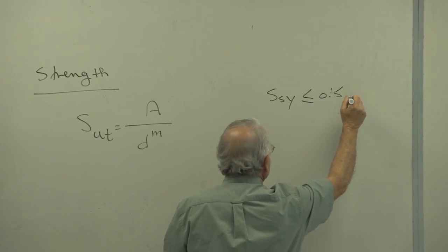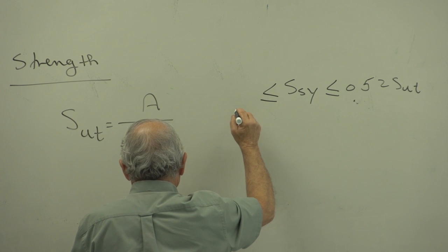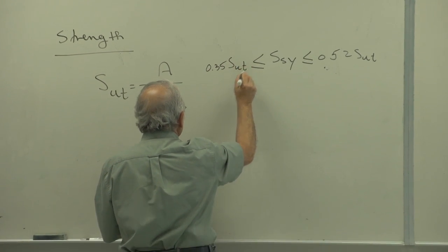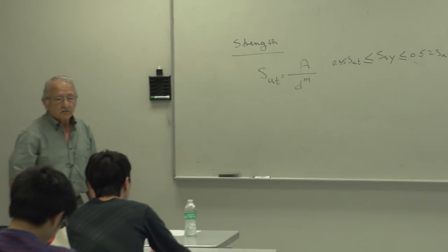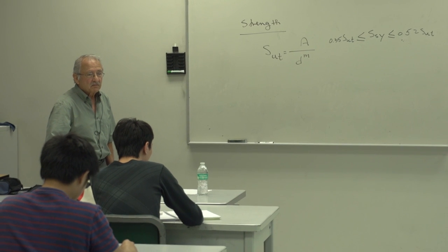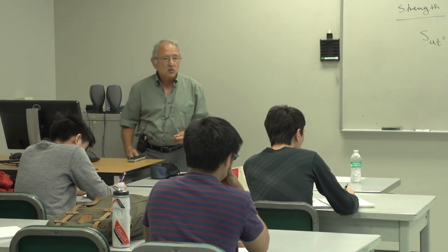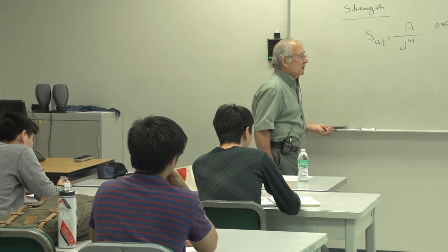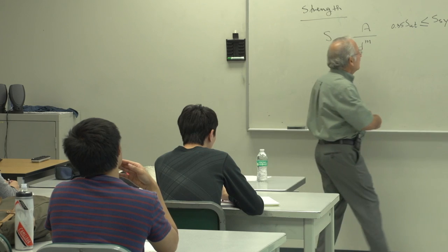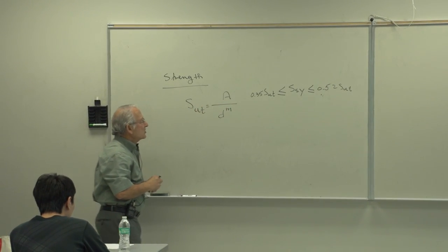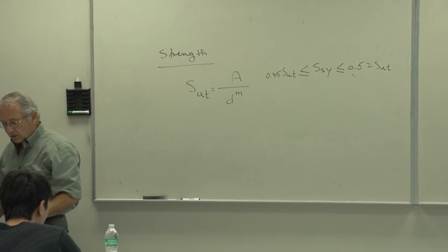In general, S_SY is less than or equal to 52% of S_UT and greater than or equal to 35% of S_UT — that's the general range. If you have no better option, you can take an average value of about 45%. But it depends on whether the spring is hot or cold rolled, whether it has set removal, and whether it is peened or not. Your yield strength in shear lies between these two numbers.